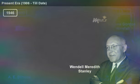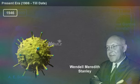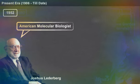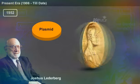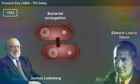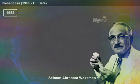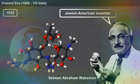In 1946, Wendell Meredith Stanley, an American biochemist, was awarded the Nobel Prize for his study on the nature of viruses. In 1952, Joshua Lederberg, an American molecular biologist, coined the term plasmid and won the Nobel Prize for discovering bacterial conjugation along with Edward Laurie Tatum and George Wells Beadle. The same year, Selman Abraham Waksman, a Jewish-American inventor, won the Nobel Prize for the discovery of streptomycin.